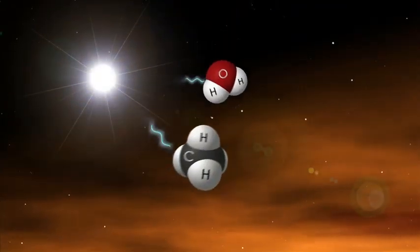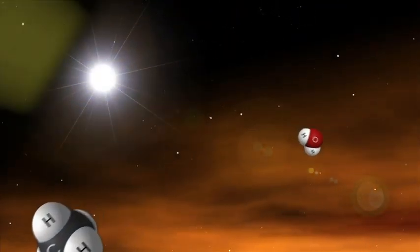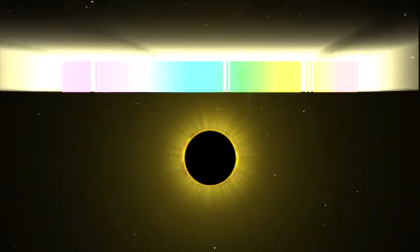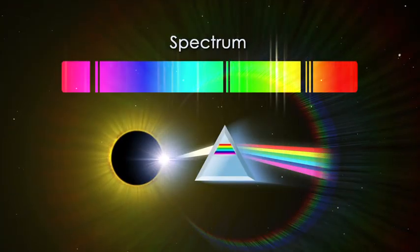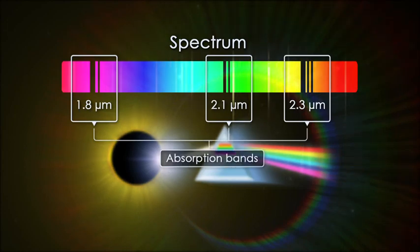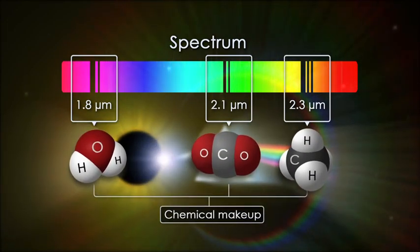Because each molecule absorbs distinct wavelengths, astronomers spread the star's light into its spectrum of colors to see which wavelengths have been absorbed. The dark absorption bands act as molecular fingerprints, revealing the atmosphere's chemical makeup.